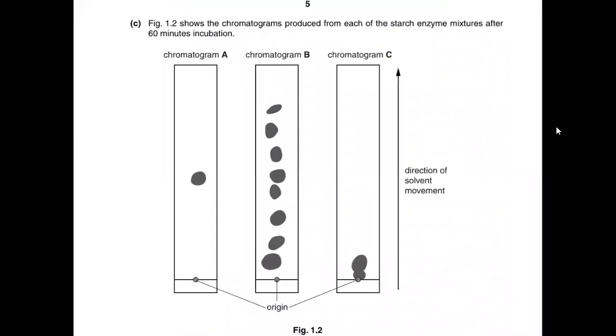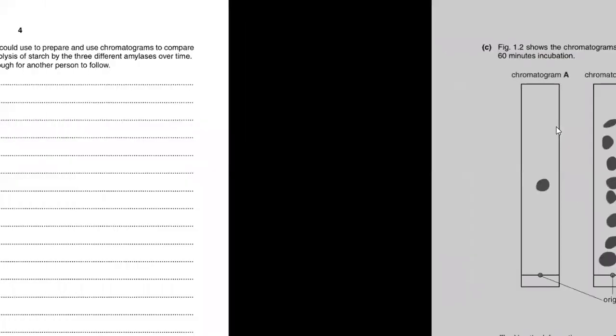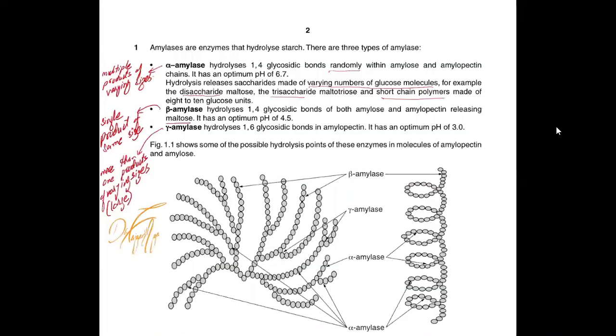Figure 1.2 shows the chromatograms produced for starch mixtures after 60 minutes of incubation chromatogram A, B, and C. In A, you have one product, one product means this one product was soluble and it traveled this much distance. In the second, you have so many products of different size and they have traveled to different distances. In the last one, you have just a limited number of products and they all stayed near the origin because probably they are very large in size. That's why they are not really moving. So you need to identify according to the description that I already mentioned in the first slide.